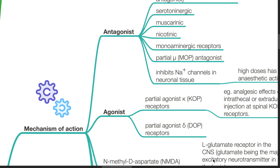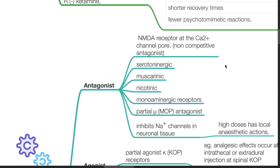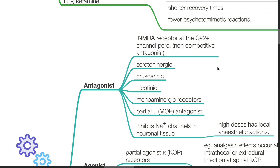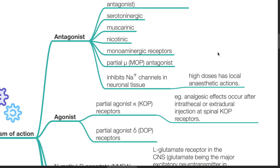Mechanism of action. Ketamine is an antagonist at the NMDA receptor at the calcium channel pore — a non-competitive antagonist. It is also an antagonist at the serotonergic, muscarinic, nicotinic, and monoaminergic receptors. It is also a partial MOP antagonist and inhibits sodium channels in neuronal tissue. At high doses it has local anesthetic actions.